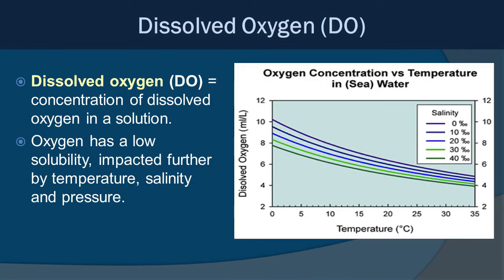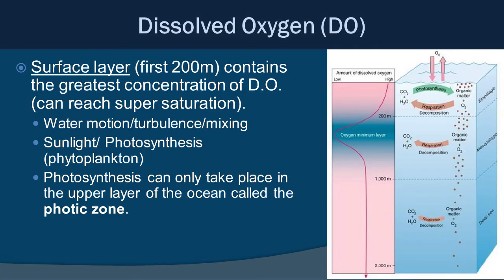Let's formally define dissolved oxygen as the concentration of dissolved oxygen in a solution. This is really critical because marine life need oxygen for cellular respiration. Oxygen has low solubility in water, and that's further impacted by temperature, salinity, and pressure. Dissolved oxygen varies vertically in the water column. At the surface — essentially the first 200 meters — you find the greatest concentration of dissolved oxygen.